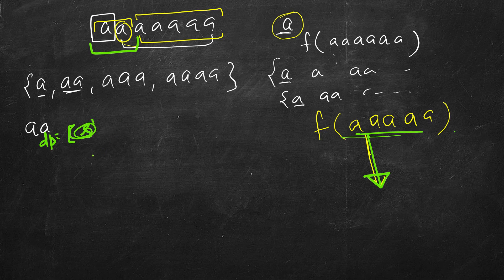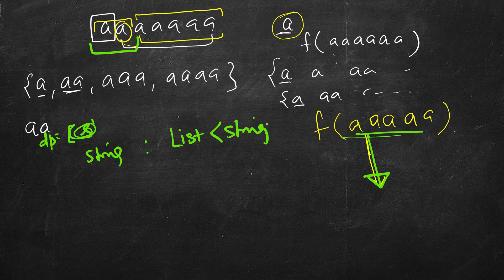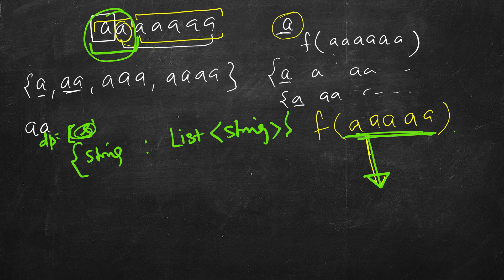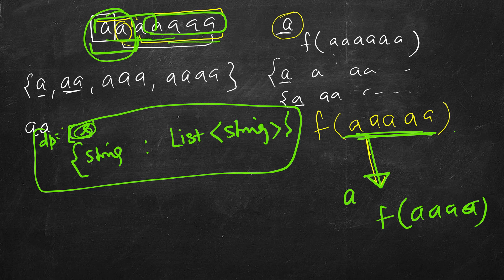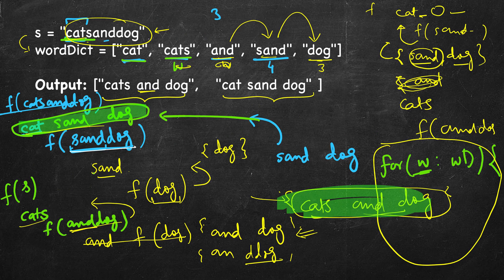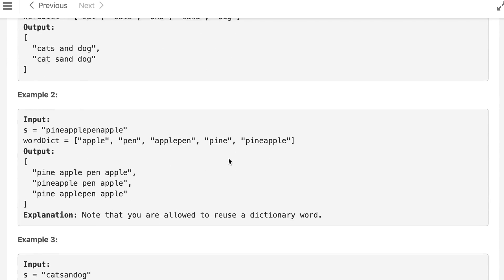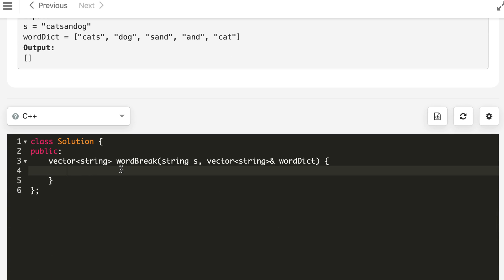That's why we add one additional cache, which we can call 'dp'. The key will be the string and the value will be a list of sentences — a vector of strings. So in the first case when 'a' is the first word, we have already considered all solutions for the suffix. When 'aaa' is the first word, we would solve the same suffix again. Many solutions will be repeated. That's why this dp cache is important. Without the cache the logic is still correct, but it will time out.